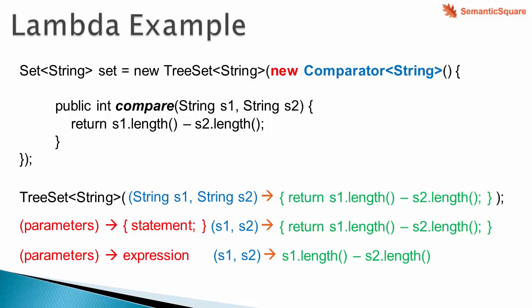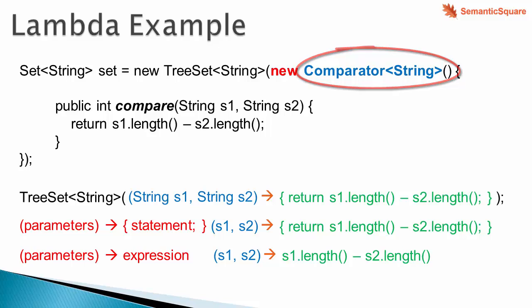Note that here we know Comparator is a functional interface. If it is not a functional interface, we would get a compilation error if we try to pass a lambda expression. A lambda expression cannot be assigned to a method parameter or any variable whose type is not a functional interface. So a lambda expression can only be an implementation of a functional interface.